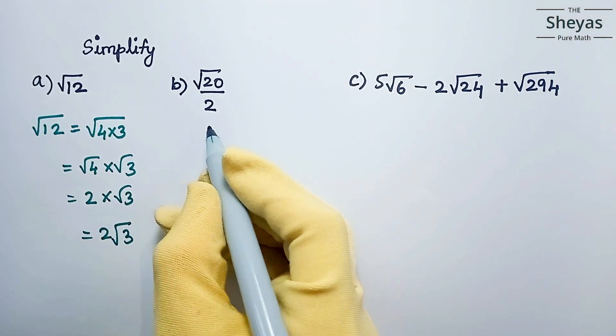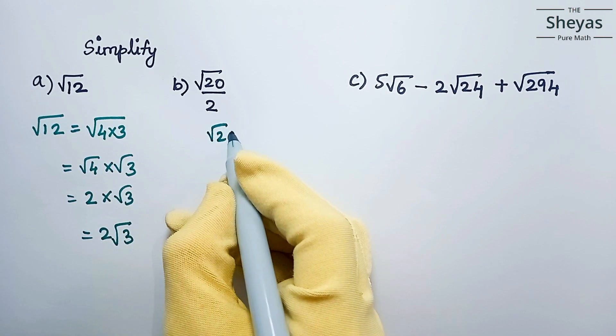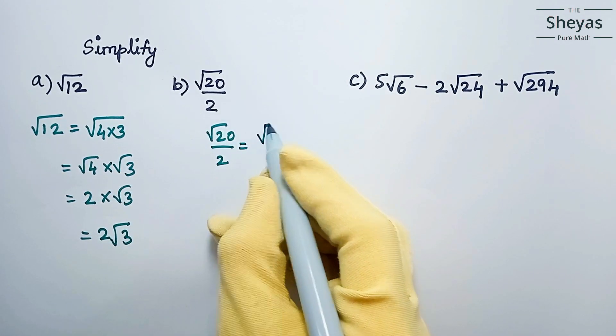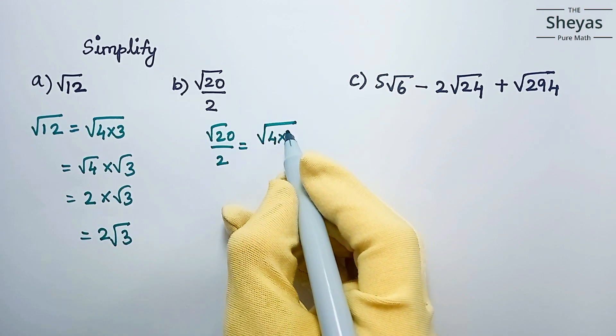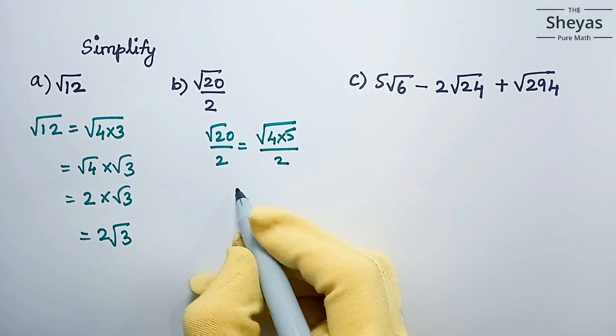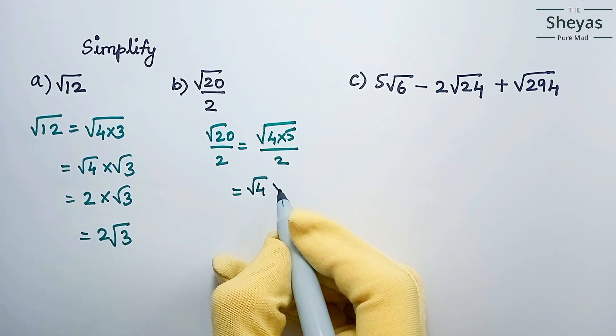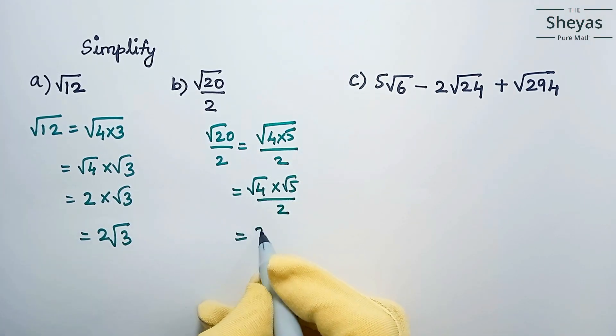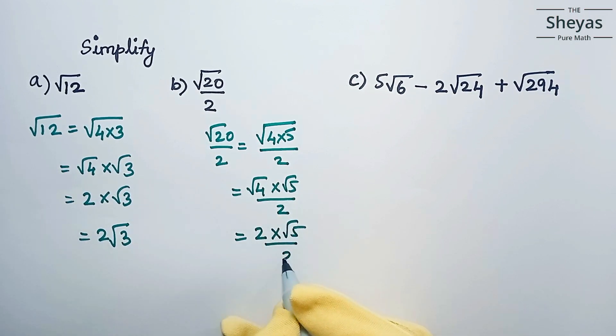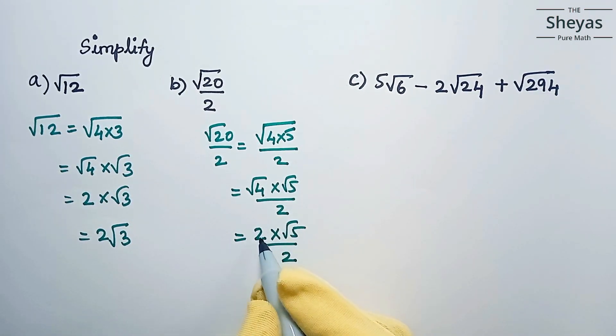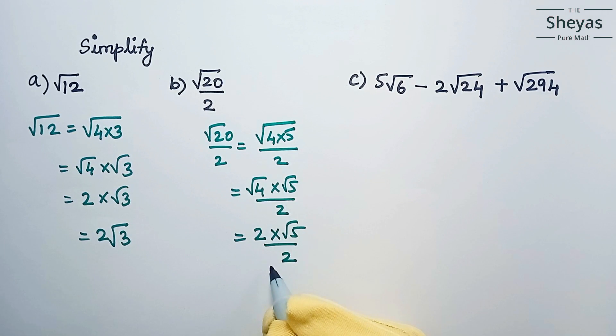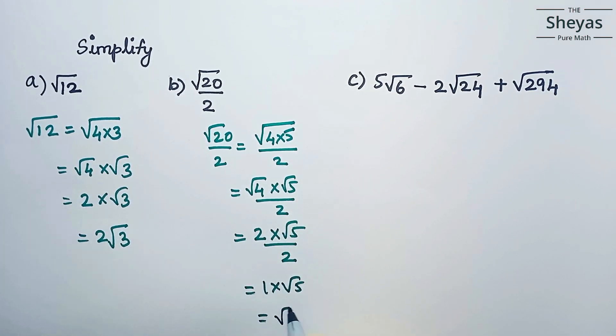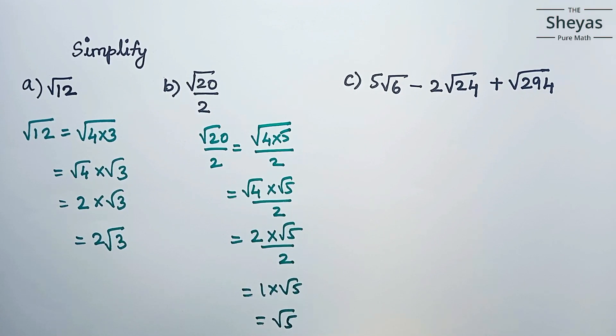Now let's see problem B: root 20 by 2. I can write root 20 as root 4 times 5 by 2, which is root 4 times root 5 by 2. Root 4 can be written as 2 root 5 by 2. If you cancel 2 and 2, when you divide 2 by 2 it is 1, so 1 times root 5 is root 5. This is the required answer.